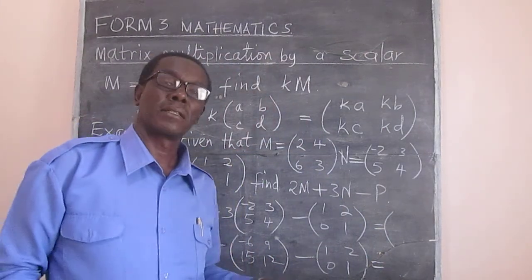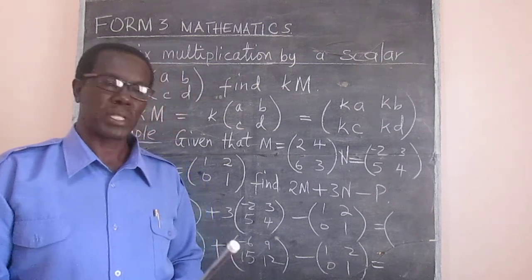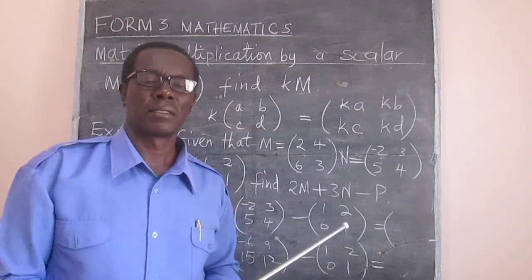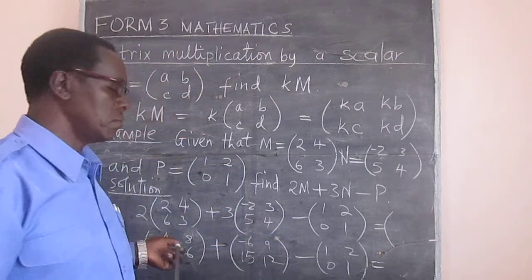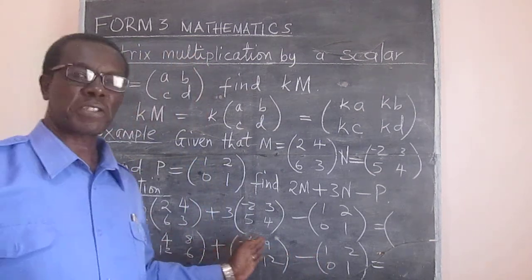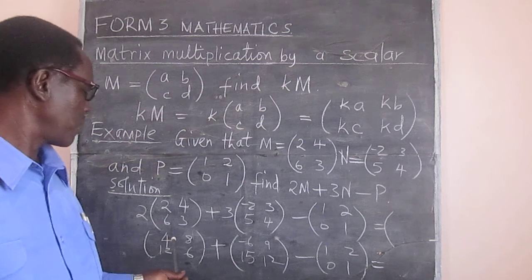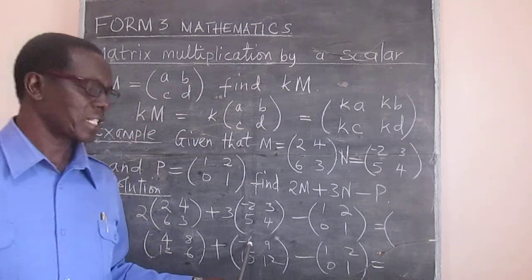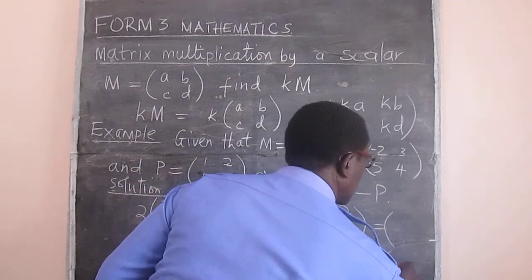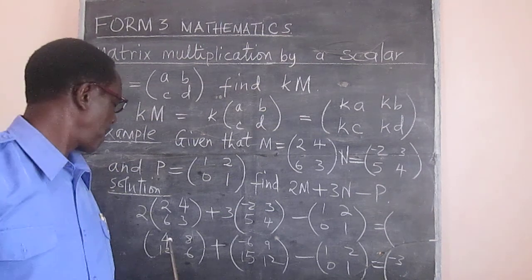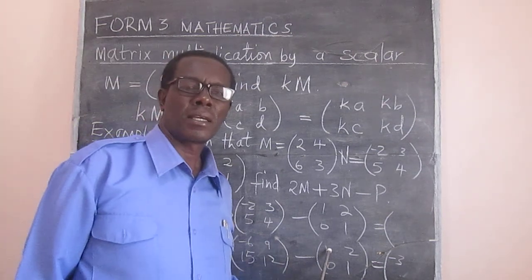Now, like we said in the last lesson, when we are adding we add corresponding elements, and the same applies when we are subtracting. That is why we emphasized that the matrices have to be of the same order. So: first element — 4 minus 6 is negative 2, minus 1 gives negative 3. Next element — 8 plus 9 is 17, minus 2 gives 15.